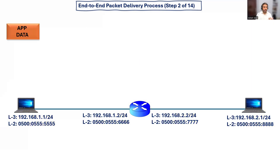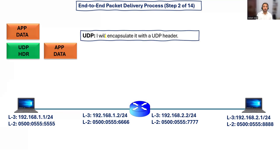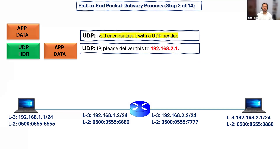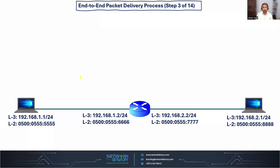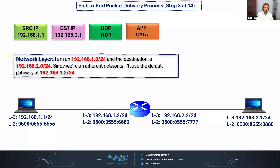Step two: we have the application data. When the transport layer receives the data, it uses UDP. UDP says: I'm going to encapsulate the application data into my UDP header. Then it contacts the network layer and says: I have data for this IP address. The network layer says: I'm going to use the IPv4 header, encapsulating the application data, the UDP header, and the IPv4 header — with source IP address 1.1 and destination IP address 2.1. In step 3, the network layer calculates using the AND operation and finds that the destination network 2.0 is on a different network.